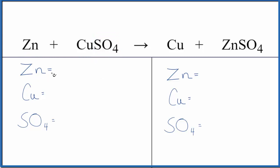So let's count the atoms up and balance the equation. One zinc, one copper, and we're going to count the SO4 as one thing. That's a polyatomic ion.